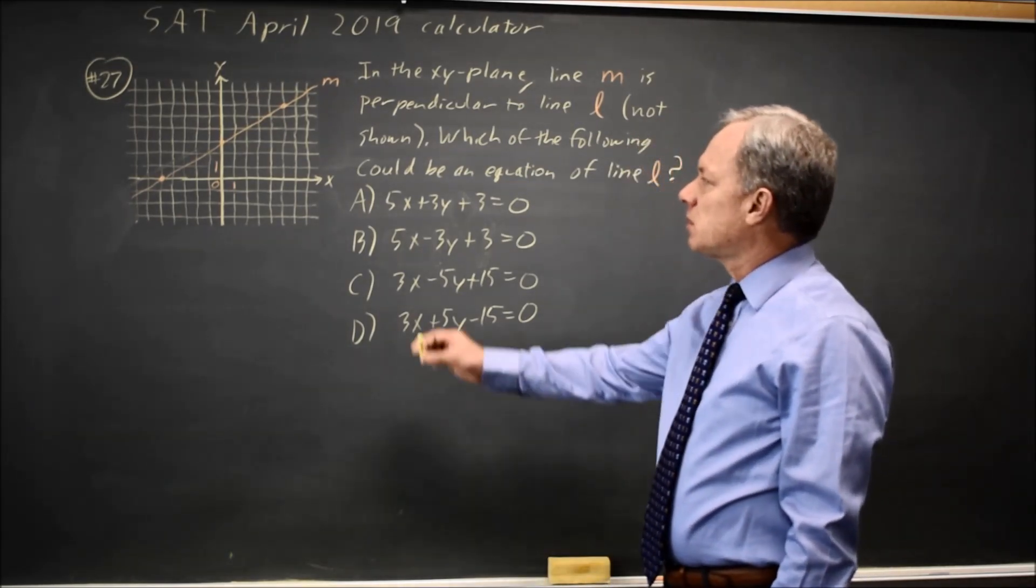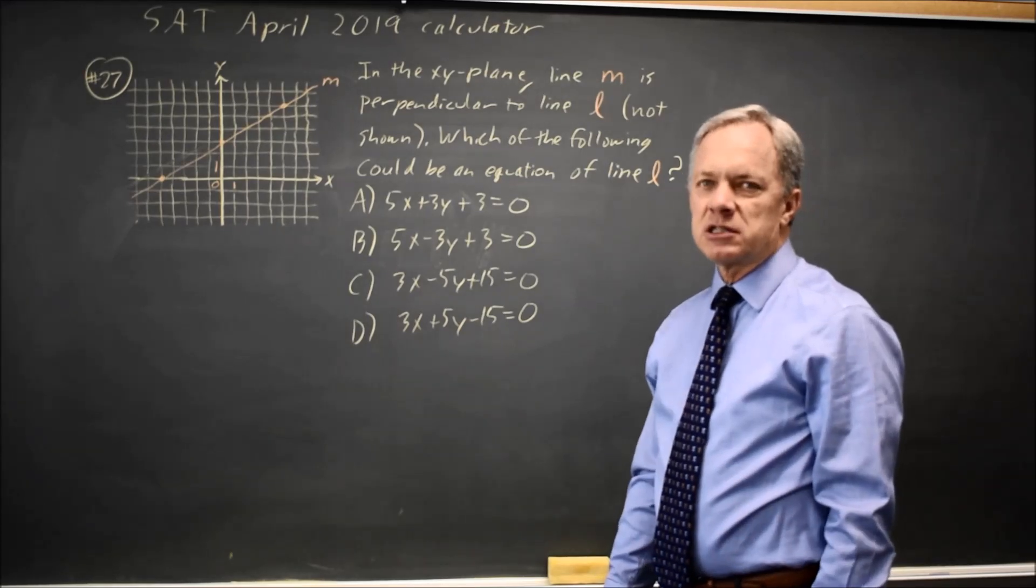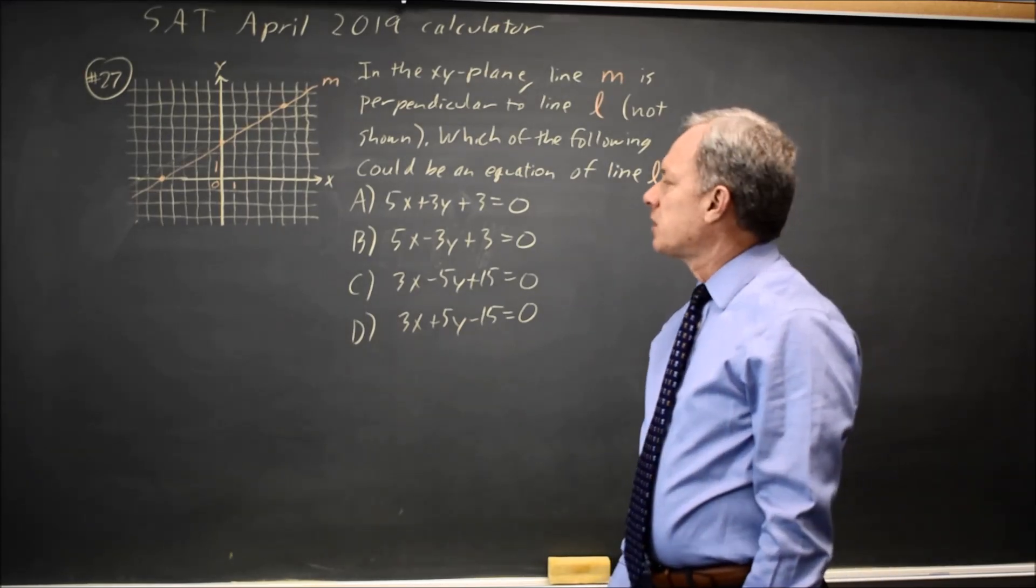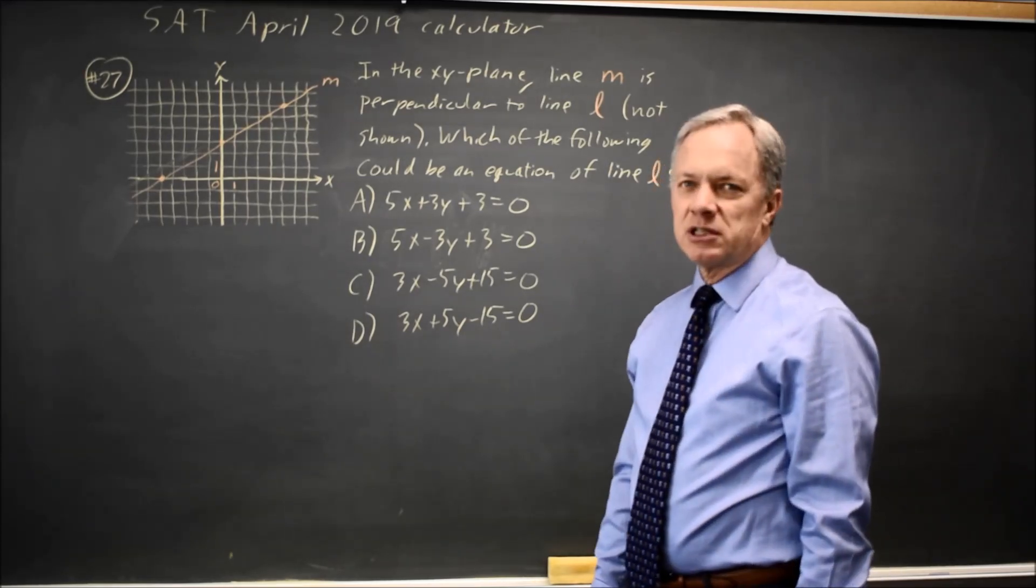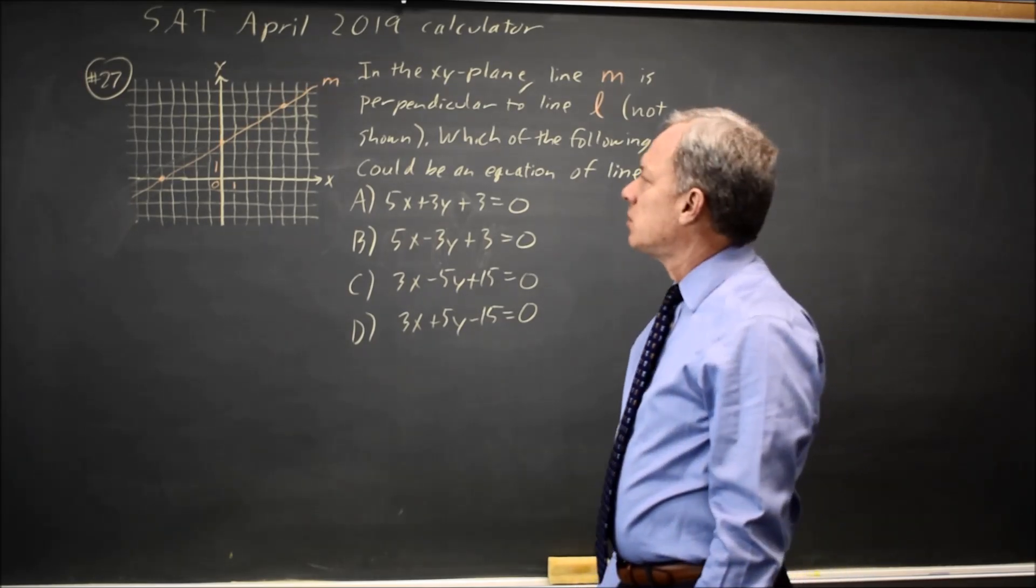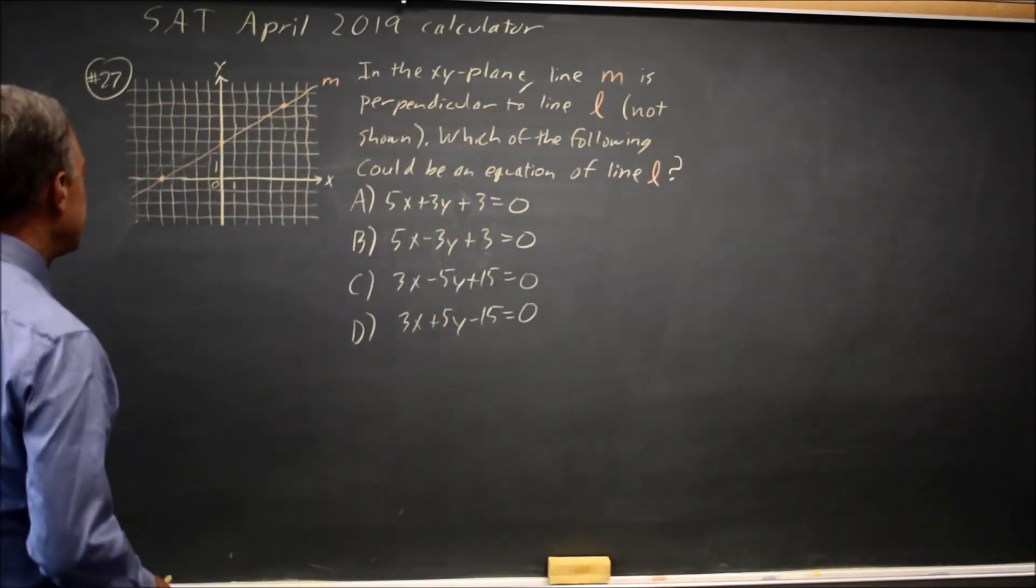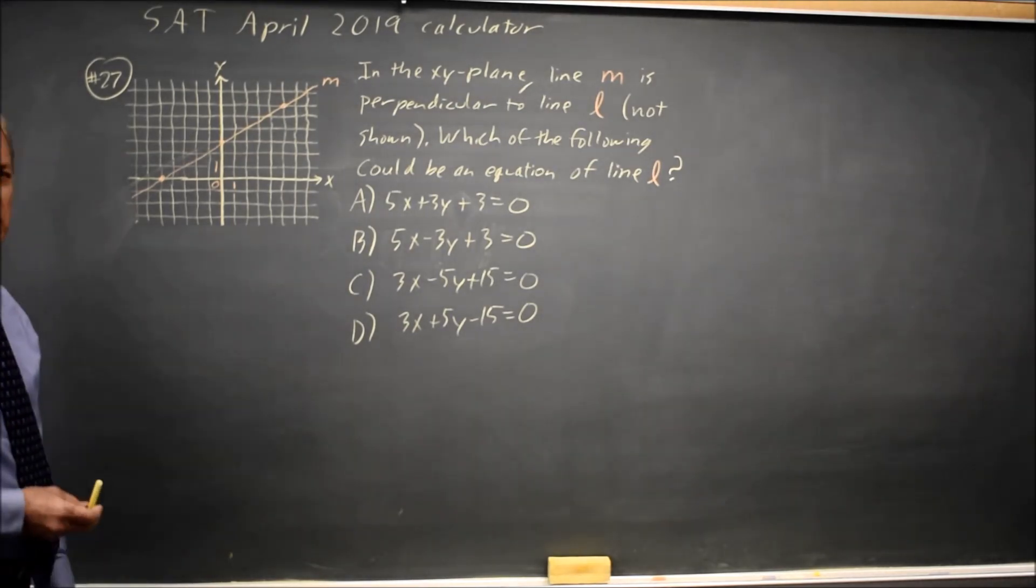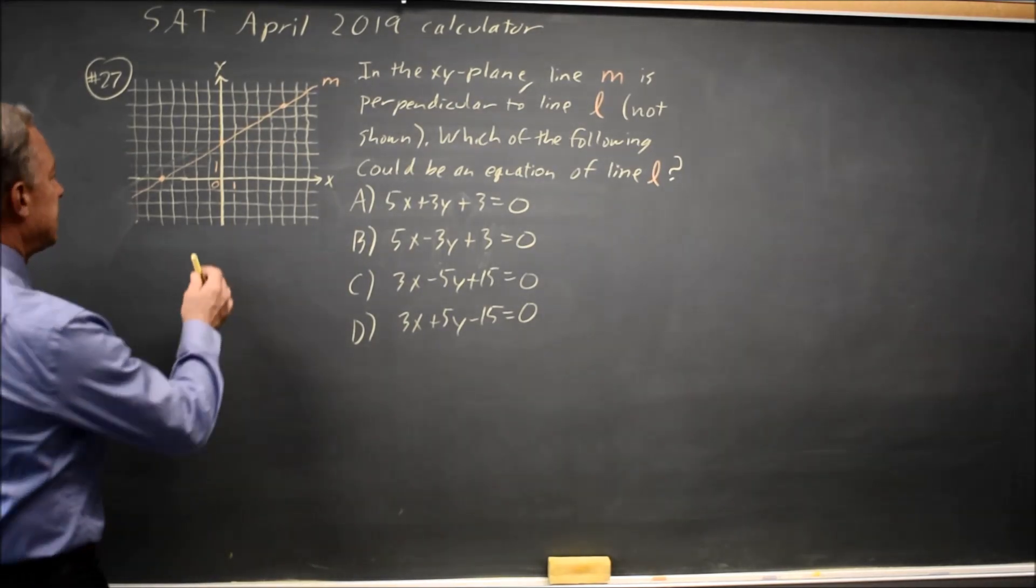These answer choices are in standard form, and if you can write the original equation in standard form, there's a way of doing it. But I'm going to go with slope-intercept form because many of us who have trouble with this prefer slope-intercept.